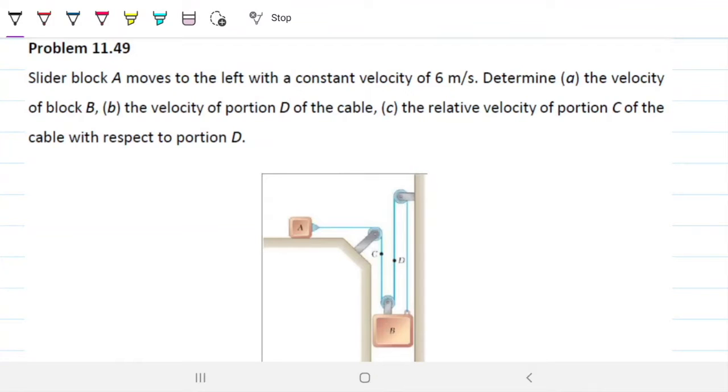Problem 11.49, the slider block. A moves to the left with a constant velocity of 6 metres per second. Determine the velocity of block B, the velocity of portion D of the cable, and the relative velocity of portion C of the cable in respect to portion D.